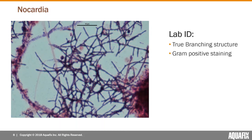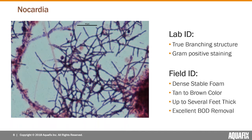For Nocardia lab ID, the key thing to note is true branching structure — following any strand, you'll see it branch off in two directions. That branching structure is somewhat unique to Nocardia. This filament is Gram stain positive — it takes that purple color clearly. For field ID, Nocardia produces the most dense and stable foam: tan to brown in color, very resistant to collapsing, up to several feet thick. It also provides really good uptake of BOD due to its massive surface area.